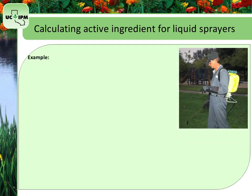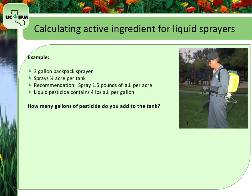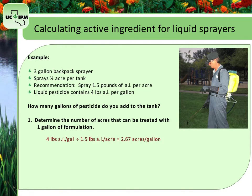Let's say you have calibrated your 3-gallon backpack sprayer and find that it sprays half an acre per tank. You have a recommendation to spray 1.5 pounds of active ingredient per acre, and the liquid pesticide contains 4 pounds of active ingredient per gallon. How do you figure out how many gallons of pesticide to add to the tank? First, determine the number of acres that can be treated with 1 gallon of product: divide 4 lb AI/gal by 1.5 lb AI/ac to get 2.67 acres per gallon of pesticide.